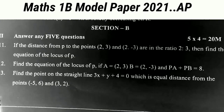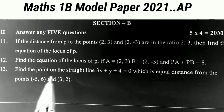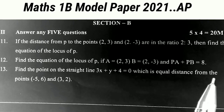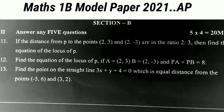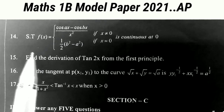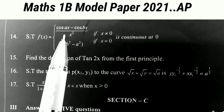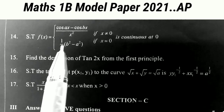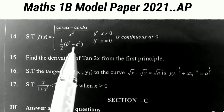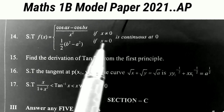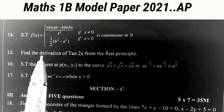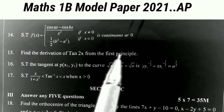The 13th sum: find the point on the straight line 3x + y + 4 = 0 which is equidistant from the points (-5, 0) and (3, 2). This is the problem from straight lines. Sum number 14: show that f(x) = (cos(ax) - cos(bx)) / x² if x ≠ 0, and equals (1/2)(b² - a²) if x = 0, is continuous at 0. This is the problem from continuity.